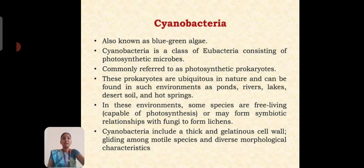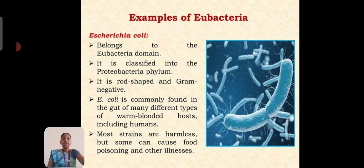The third type is Cyanobacteria, also known as Blue-Green Algae. Cyanobacteria is a class of blue bacteria consisting of photosynthetic microbes, commonly referred to as photosynthetic prokaryotes. These prokaryotes are ubiquitous in nature. Cyanobacteria can be found in environments such as ponds, rivers, lakes, desert soil, and hot springs. Some species are free-living, capable of producing photosynthesis, or may form symbiotic relationships with fungi or lichens. Cyanobacteria include a thick and gelatinous cell wall, with some being motile and showing diverse morphological characters.